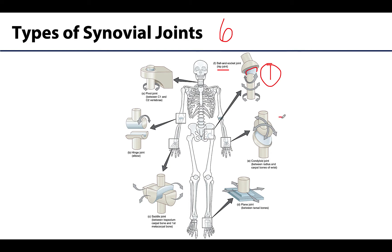Our next stop is the condyloid joint, sometimes referred to as ellipsoid or ellipsoidal joints. In condyloid joints, you have two relatively oval-shaped projections and depressions fitting together, and these joints are capable of movements in two planes, so often referred to as biaxial. They are capable of flexion and extension as well as abduction and adduction, and with this complex of movements, that also can lead to circumduction. An example of a condyloid joint is the radiocarpal joint, sometimes referred to as the wrist joint — between the radius and the proximal row of the carpal bones.